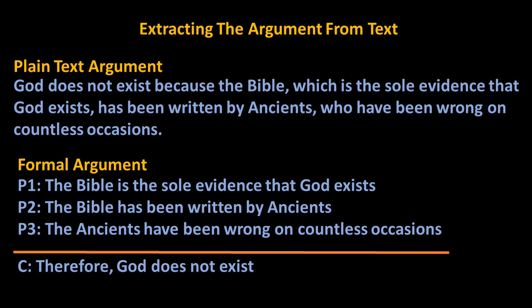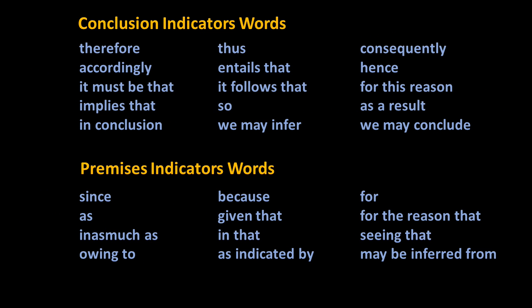In recognizing conclusions and premises within a block of text, it is helpful to note words that typically indicate conclusions. These are sometimes called conclusion indicators. Conclusion indicators include words such as: therefore, thus, consequently, accordingly, entails that, hence, it must be that, it follows that, for this reason, implies that, so, as a result, in conclusion, we may infer, and we may conclude.